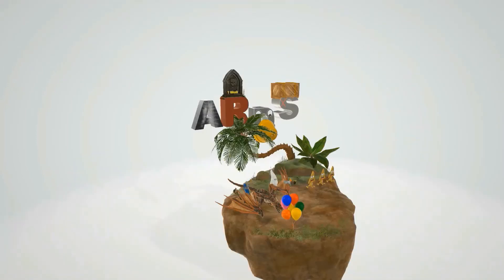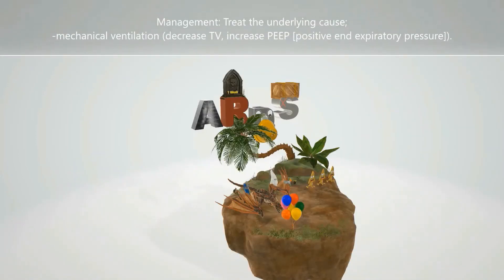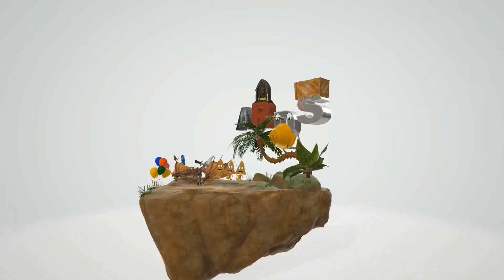Management of Acute Respiratory Distress Syndrome includes treating the underlying cause, as well as mechanical ventilation in order to decrease the tidal volume and increase the PEEP. I hope you enjoyed this video — maybe one day we'll improve on it. Take care.